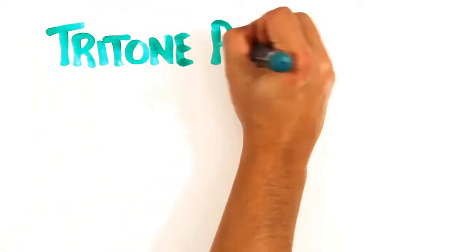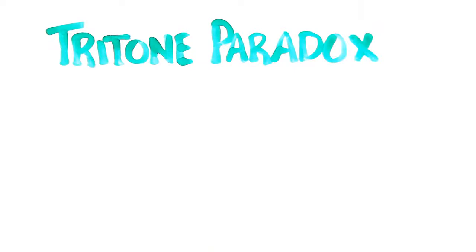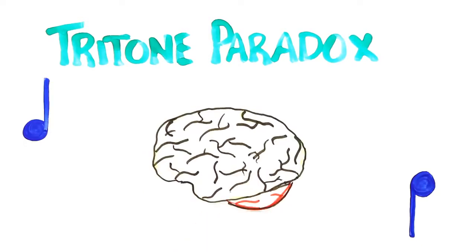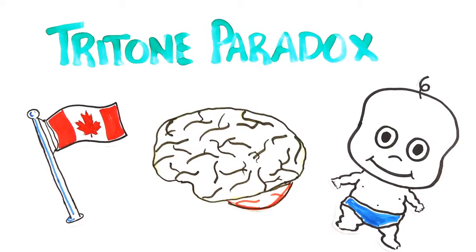It's an auditory illusion called the tritone paradox. It's created in such a way that the tones contain both a higher and lower frequency in them, but our brains have a preference of which to listen to. Diana Deutsch, the creator of this illusion, found that your geography and language from infancy all play a role in deciding this preference.